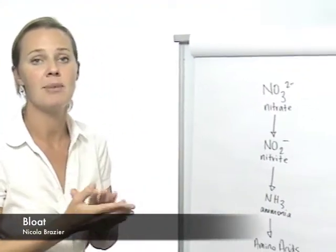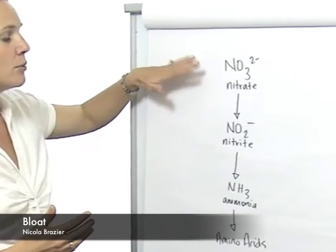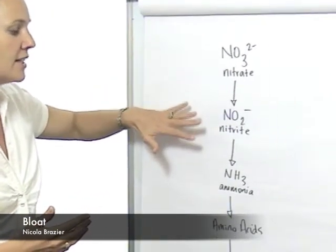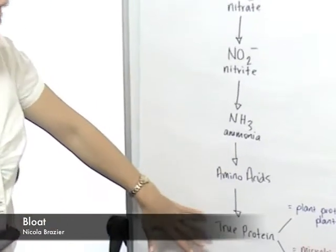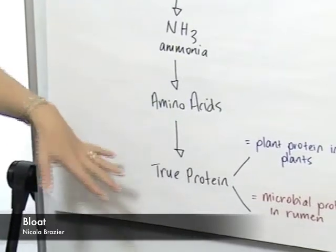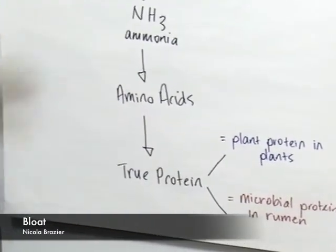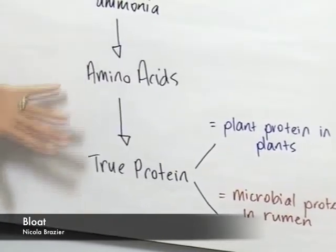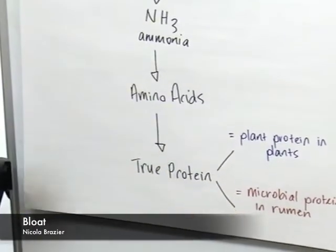High levels of soluble protein mean that we have high levels of nitrate or nitrite within our plants. Under normal situations, this nitrate will be converted through to nitrite, to ammonia, to an amino acid, and then to a true protein. If this whole process happens within the plant, we can refer to this as plant protein. In many cases, this process needs to be finished in the rumen, in which case the protein is actually microbial protein.